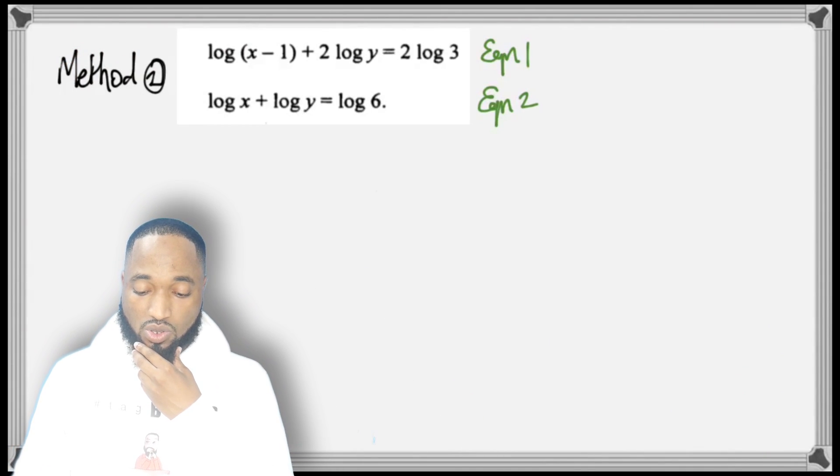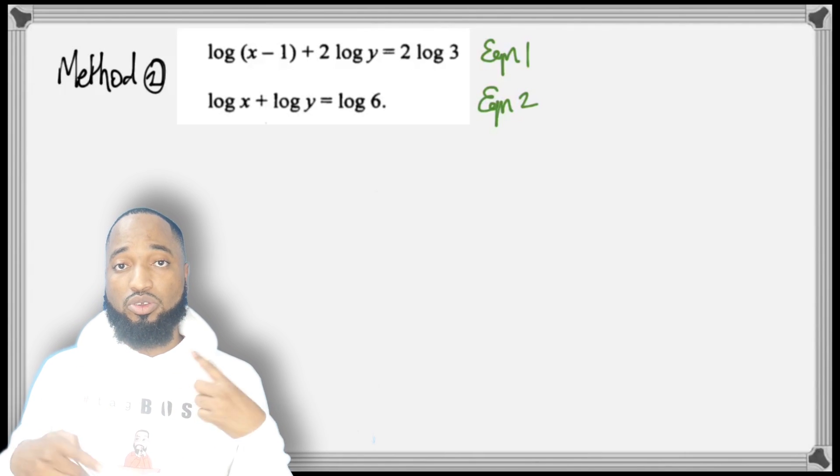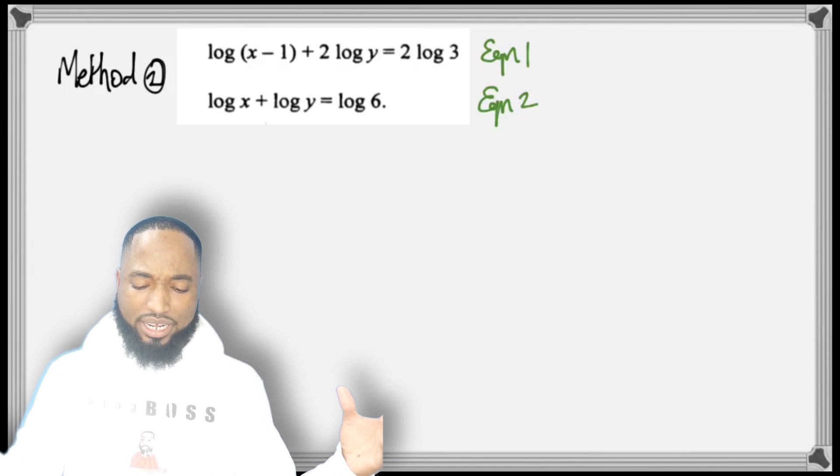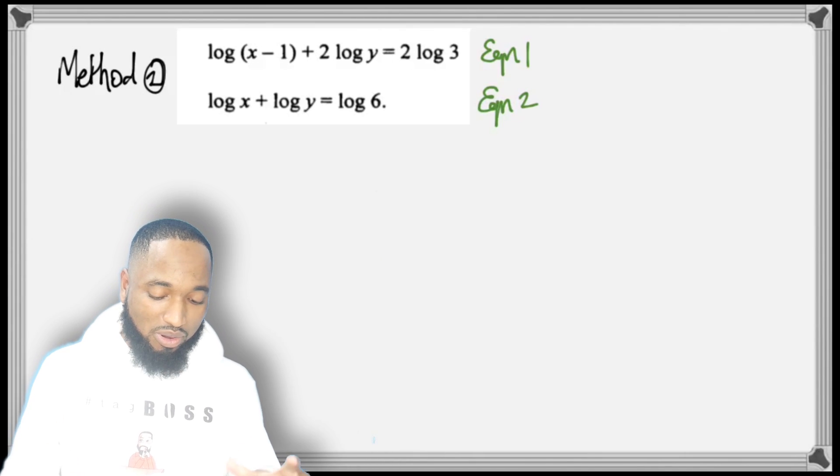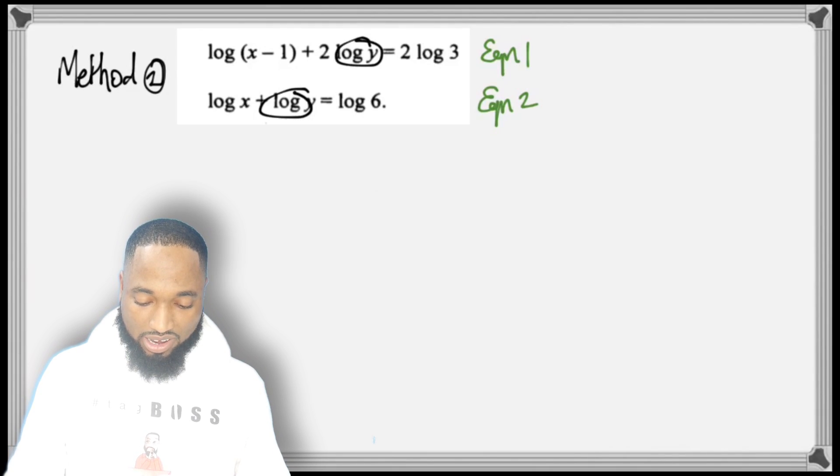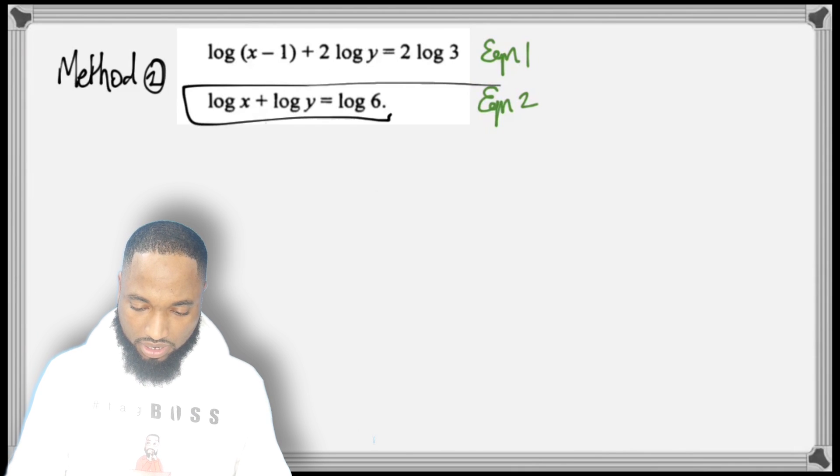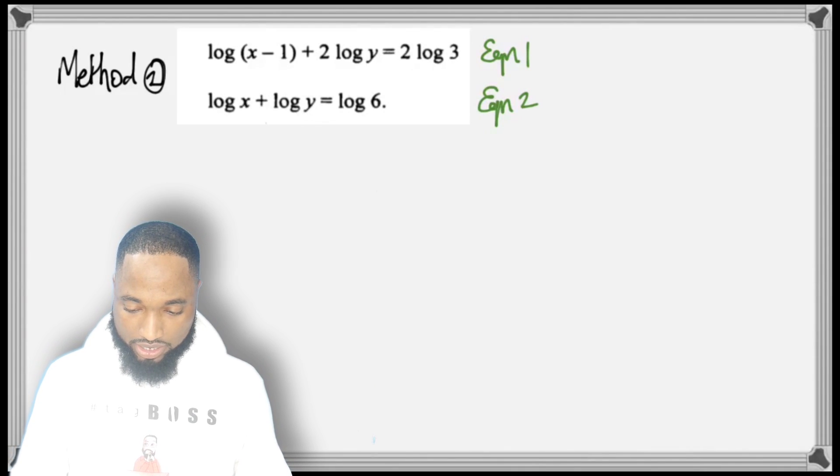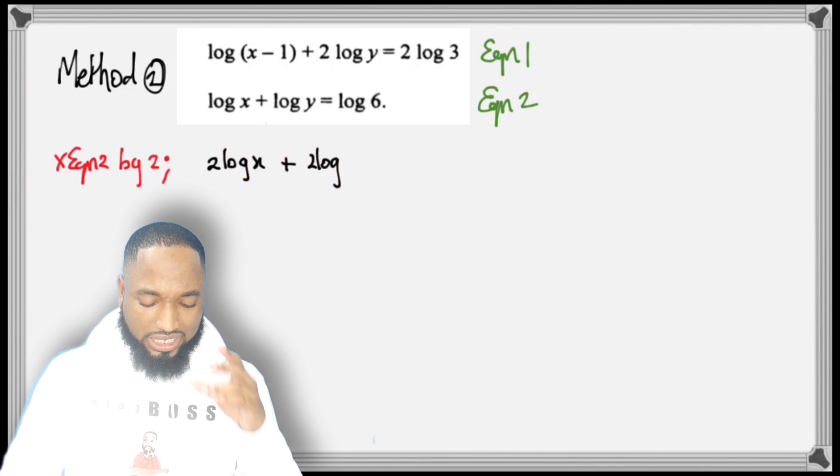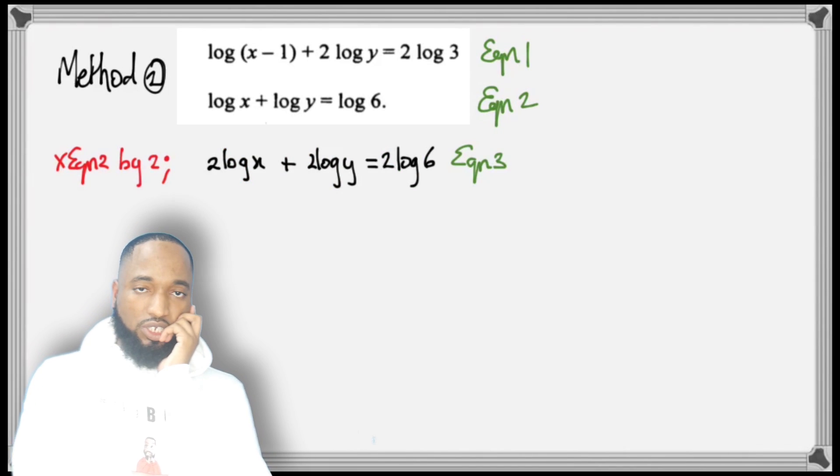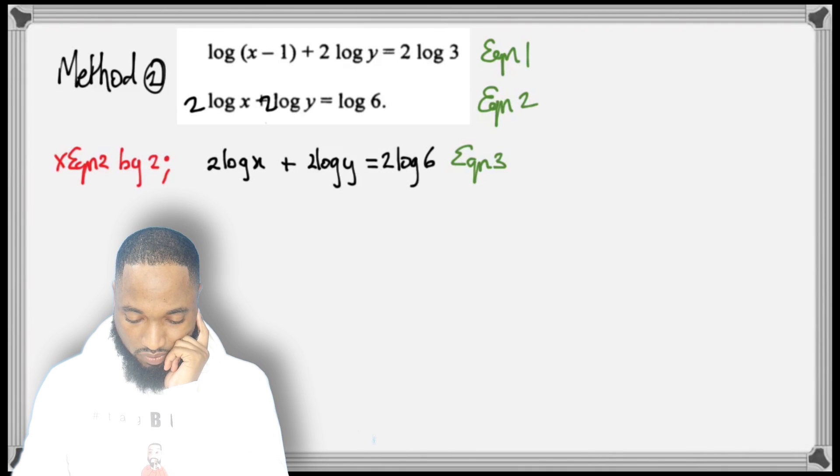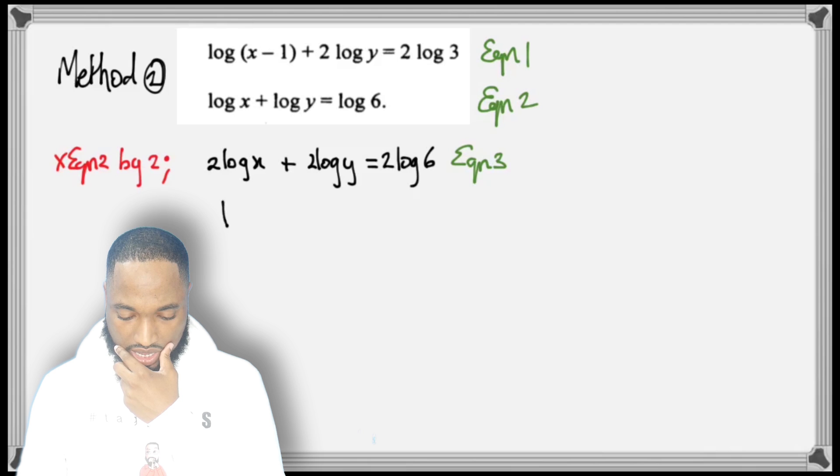Let's check another method that students may use, or that may actually be better for you in your exam. You always need to keep your mind open when doing pure maths. If you look here, it's in log y here and log y there, so I could multiply this whole equation by 2. I'll get 2 log y here, and maybe I can do something. What do you think I'm going to do here? I'm multiplying Equation 2 by 2, so I get 2 in front there, 2 in front there, 2 in front there, and 2 in front there.